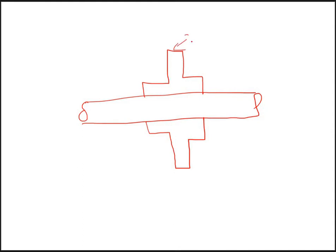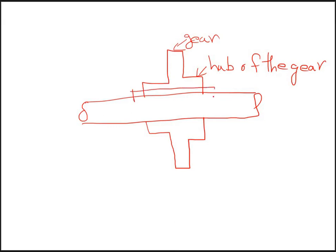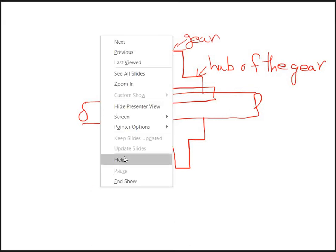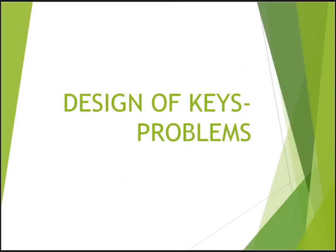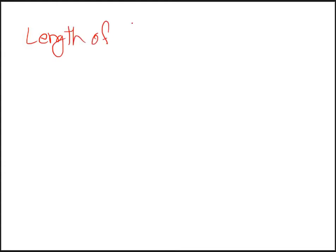There is a gear and this is the hub of the gear. There will be a key connected through the hub, so the minimum length of the key should be 60mm. From this data we have determined the length of the key, L is equal to 60mm.